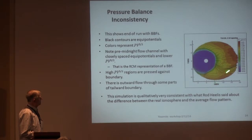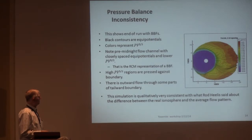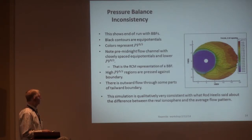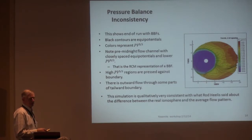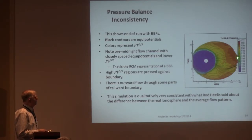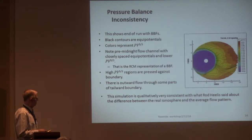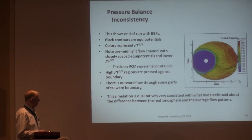Here's a sample clip from this. The black lines are equipotentials and PV^gamma is the color. This is a bursty bulk flow — the bursty bulk flows in the boundary conditions were sort of active here, and at this particular time it was here. The closely spaced equipotentials mean strong flow. There is some outward flow through the boundary here, so these high PV^gamma regions lie mostly on outgoing flow and will go out mostly, but not all. This simulation is very consistent with what's been said about the difference between the real ionosphere and the average flow pattern.